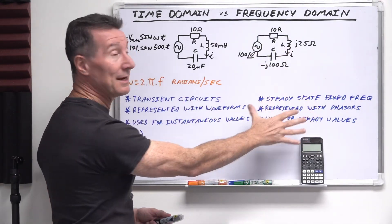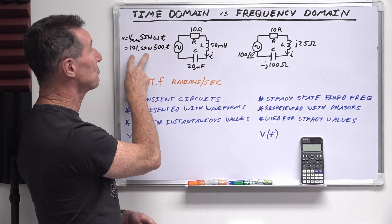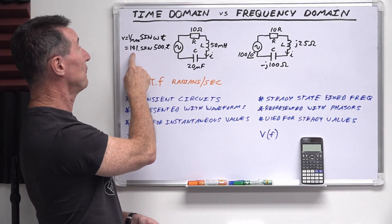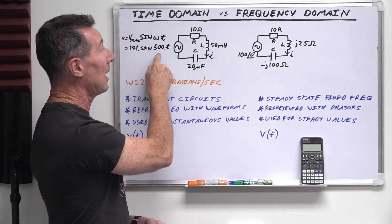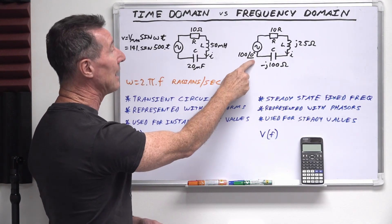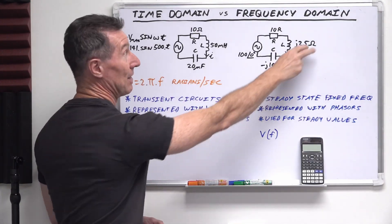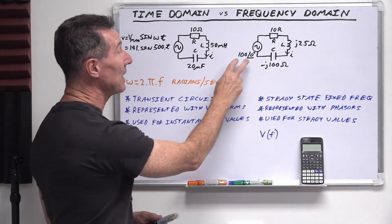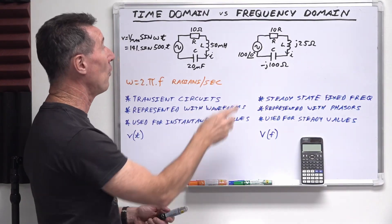So in frequency domain analysis over here, we use, instead of using the instantaneous representation, these two circuits are identical. So this 141 sine 500 t, which is 500 radians per second, this is going to translate over to 100 angle 0 over here. And then the radians per second will then translate into these values here when we look at the L's and the C's.